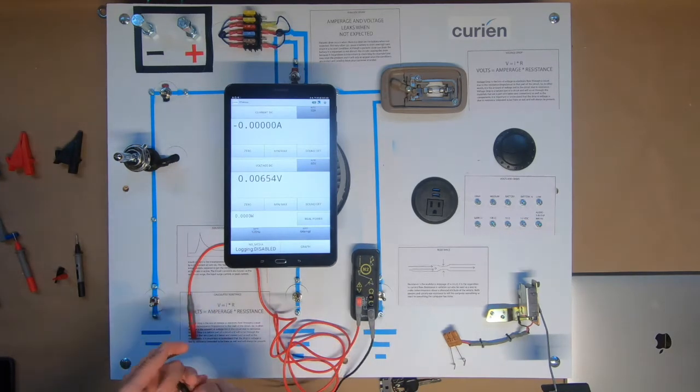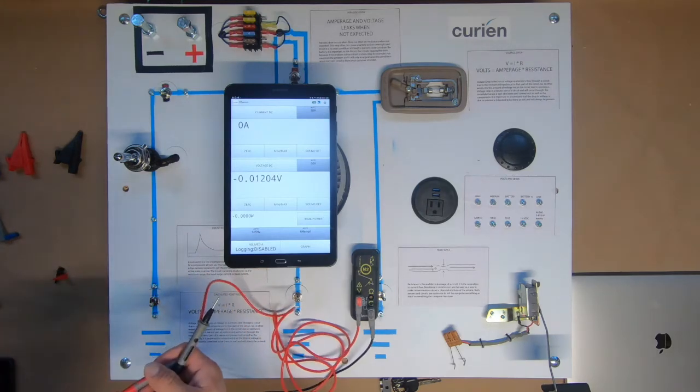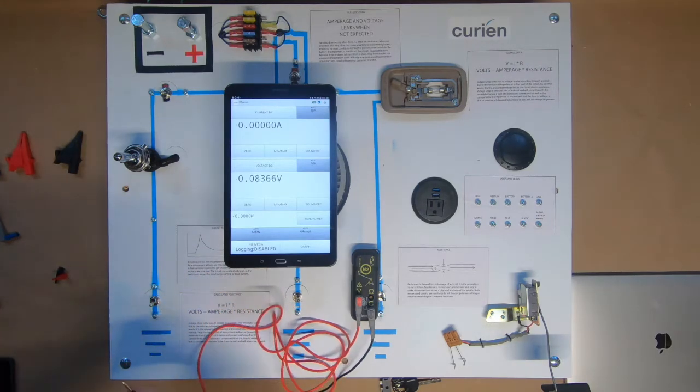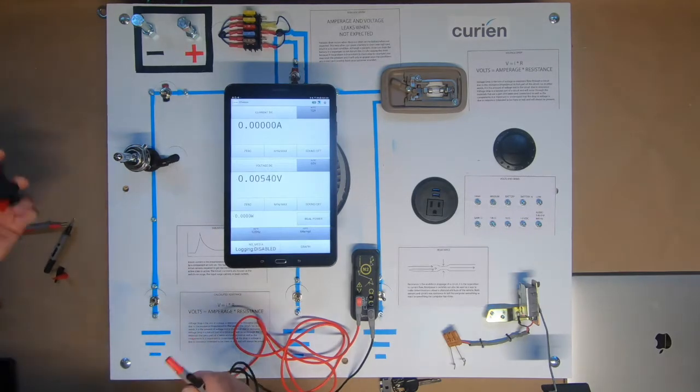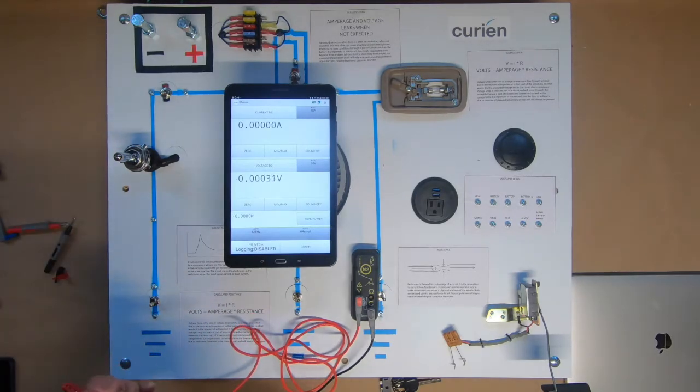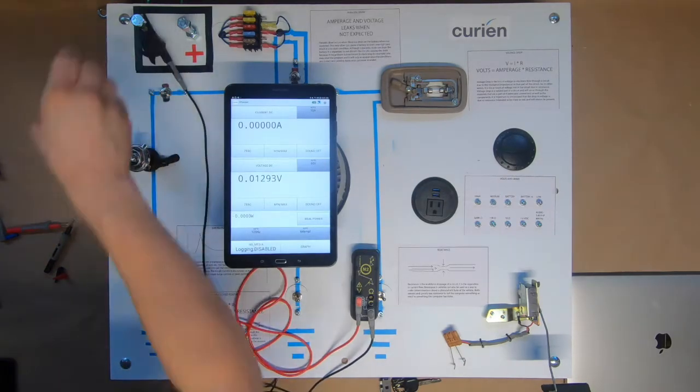So here on the screen you can see that we are currently hooking up the N2 Neuron and it's already been connected to the app. We are going to be connecting our volts port here through our red cable to the positive side of a circuit and the black side, common side, to the ground.